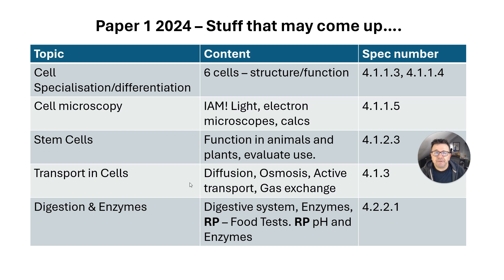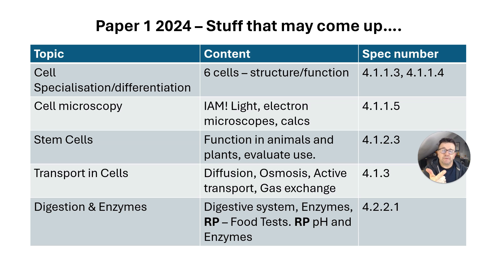On transporting cells, there was a bit of diffusion in paper one last year, but nothing on osmosis, active transport, or gas exchange. So learn what makes a good exchange surface: large surface area, thin membranes for a short diffusion pathway, and maintaining a concentration gradient. On digestion and enzymes, there was content on enzymes but the two required practicals — food tests and pH and enzymes — were not covered.